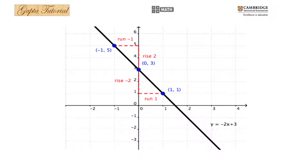Now, if we are going to find the gradient value — that is, the slope — you know that slope is rise over run. The rise over run value we get is -2, which is the value of m.